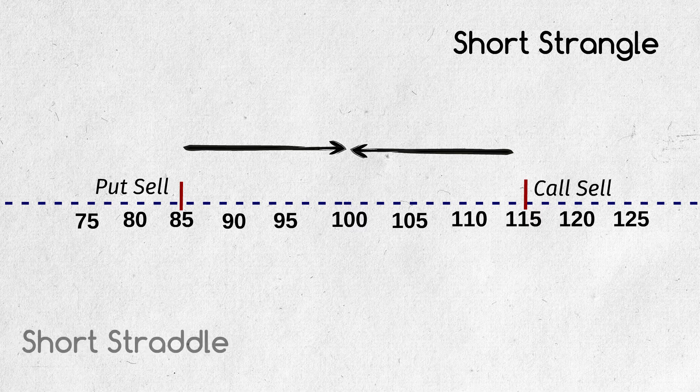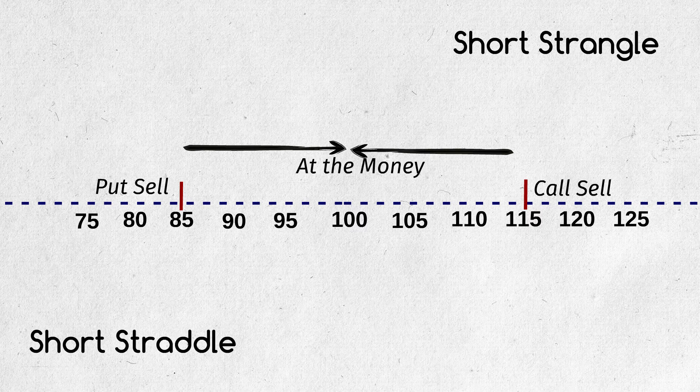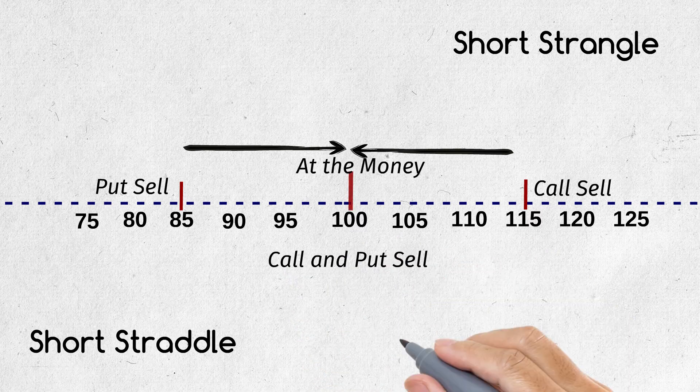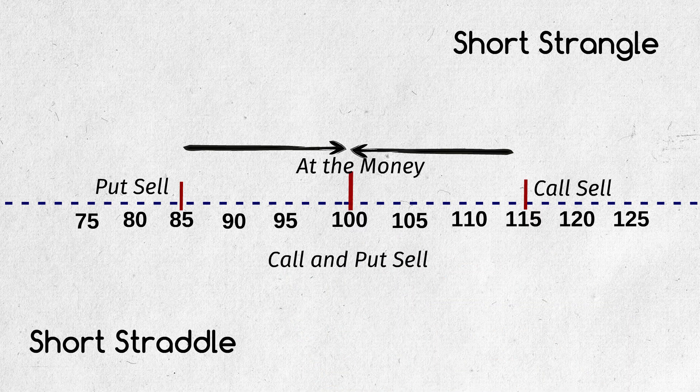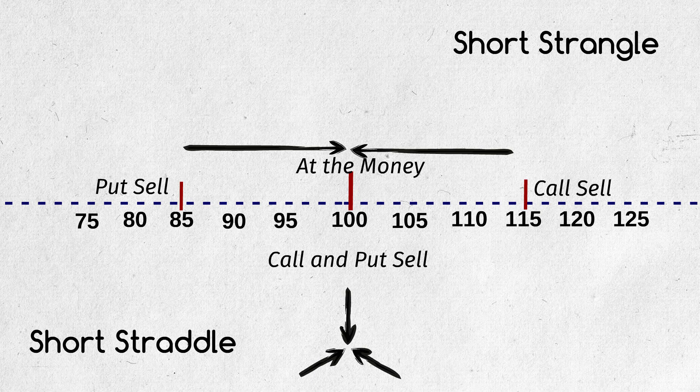But in short straddle, we sell one at the money call option and also sell one at the money put option. So for highest profit in this strategy, the price must close at the same price we have shorted, which is not always possible. There won't be that much range as in strangle, but we will be having some range, which we can see in the payoff diagram.